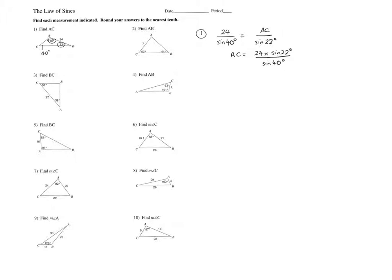We cross multiply to find AC, and this comes up here, and then we get the calculator out and AC is 13.99.